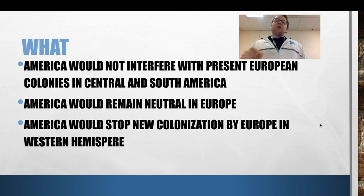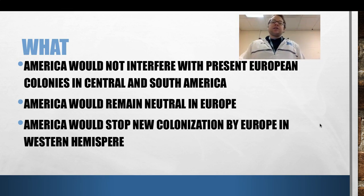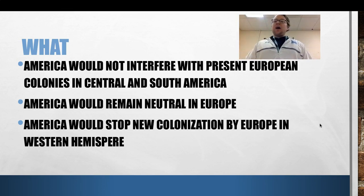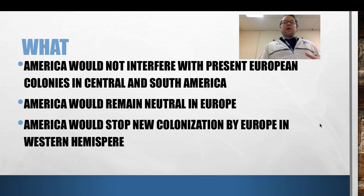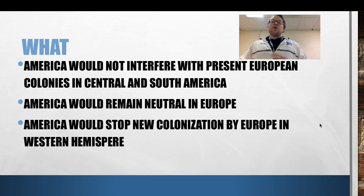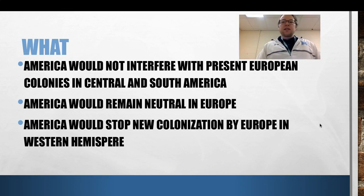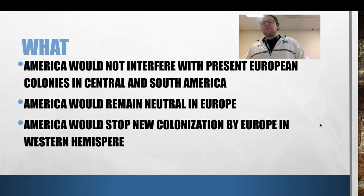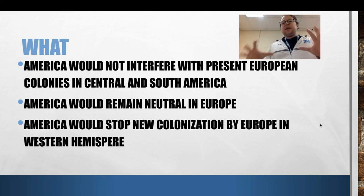Going all the way back to Washington's foreign policy, we're going to try to remain neutral in foreign affairs. But here's the big one: America is going to stop any new colonization by Europe in the Western Hemisphere. They were very vague on this — they didn't exactly say how or why or what they would do — but they said any future colonization by Europe in the Western Hemisphere is going to be stopped by the United States. This is a big jump in foreign policy: we're basically going away from saying we are neutral to now being more active.